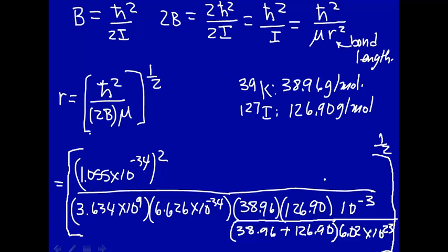If we plug all those numbers in, this is equal to 3.05 times 10 to the minus tenth meter. So that's the bond length. That's the distance between the potassium and the iodine nuclei. This is 3.05 angstrom. There's 10 to the minus tenth meter in an angstrom. So that's how one gets bond lengths from rotational spectroscopy.